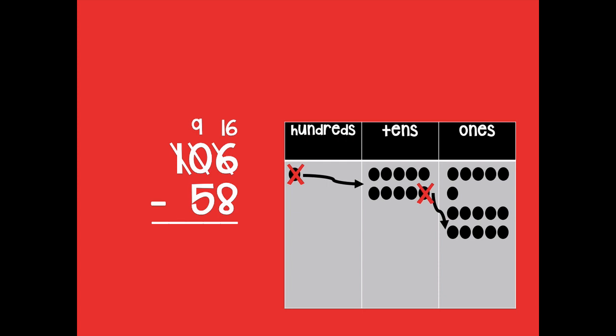So now I have no hundreds left. I have nine tens and now I have 16 ones. And again, remember I have 16 ones because I had 10 that I just unbundled and then I had 6 ones already, so 10 plus 6 equals 16.